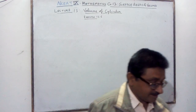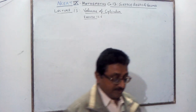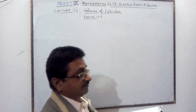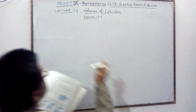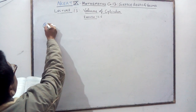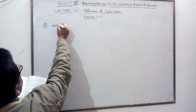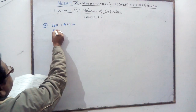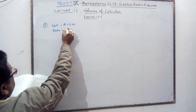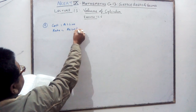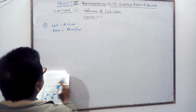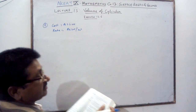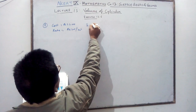Hello students, you are studying the chapter Surface Areas and Volumes, Exercise 13.6, Question Number 5. The cost of painting is given as rupees 2200, the rate is rupees 20 per meter square, for a cylindrical vessel that is 10 meters deep.